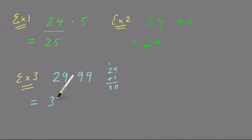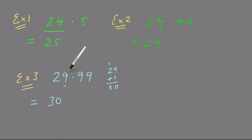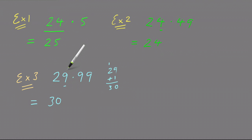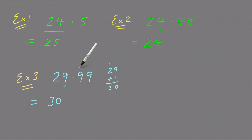Another way to think about it is: what is the next whole number after 29? That would be 30. So looking for the next whole number is another way of rounding that nine up one. Therefore 29.99 rounded to the nearest whole number is 30.